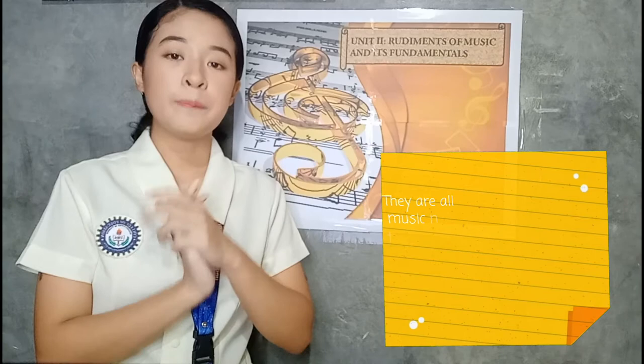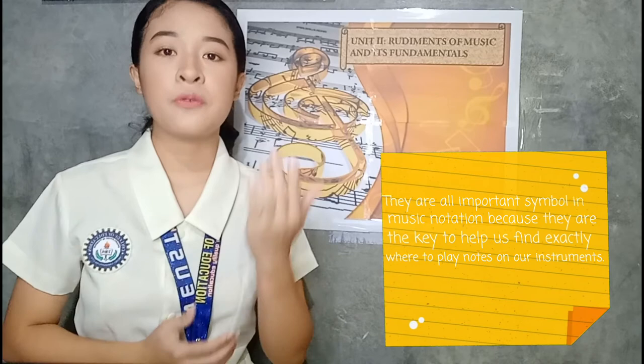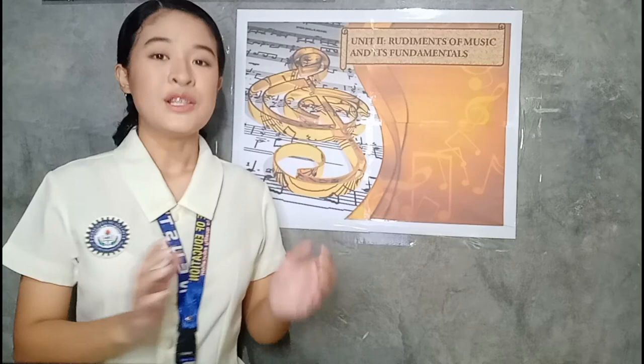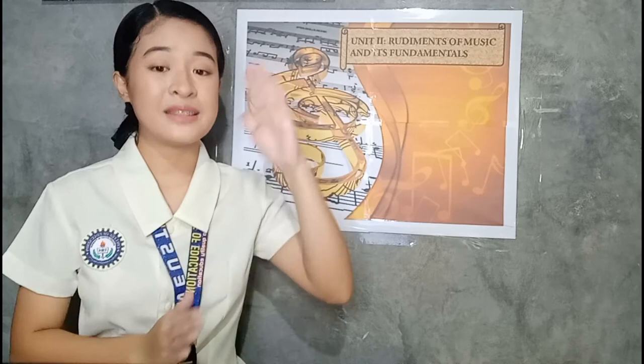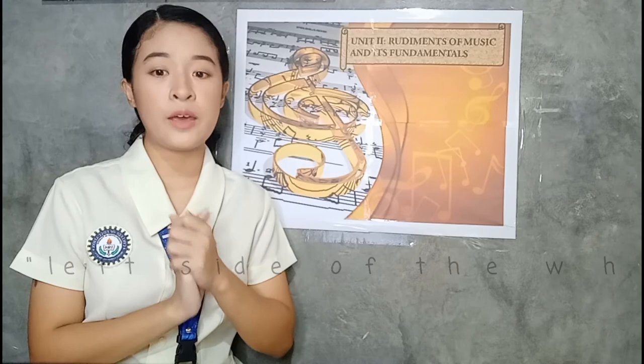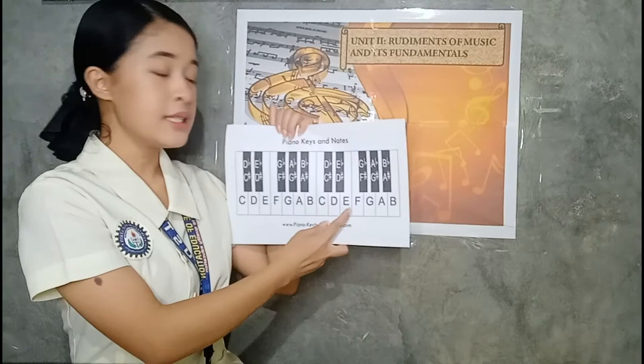Therefore, we can conclude that all of these clefs are important symbols in music notation because they are the key to helping us find exactly where to play notes on our instruments. Now let's proceed to accidentals. What is a flat? Basically, a flat lowers a note one half step — in other words, it decreases the pitch by half. On a piano keyboard, you can find it on the left side of a white key.